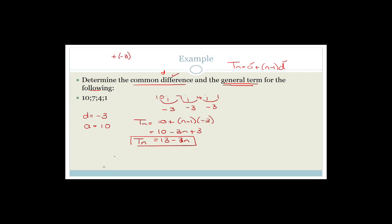Let's test it. The fifth term should be 1 minus 3 equals minus 2. T5 equals 13 minus 3 times 5, which is 13 minus 15, which equals minus 2. It works! This is why we have general terms — if they asked for T157, we don't add up all the way. We'd just calculate 13 minus 3 times 157 on the calculator, which gives minus 458.